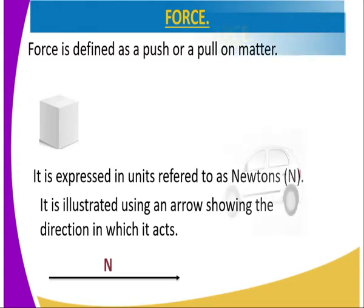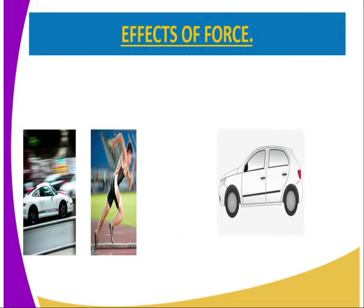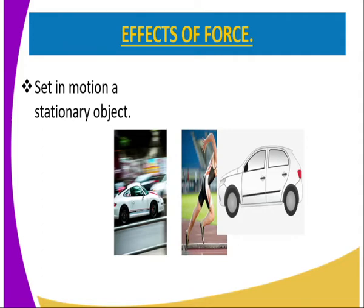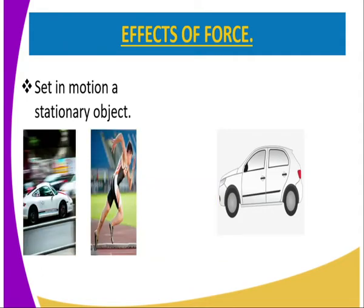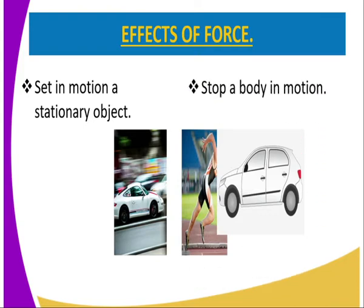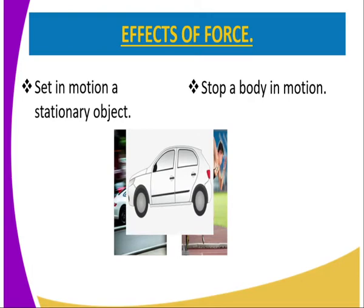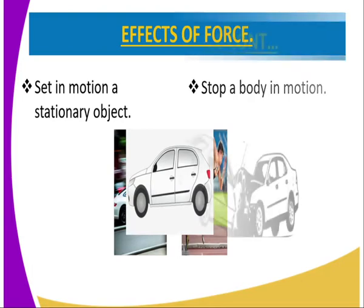So since it is a push or a pull on a body or on matter, what are some of the effects that we have on matter? Number one: it sets in motion a stationary object. That is, a body that is stationary can be set in motion. Number two: it can stop a body which is in motion. So once a body is in motion, we apply force to make that body stop.